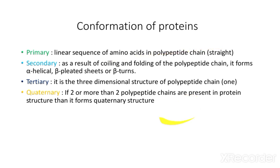Quaternary structure: if two or more than two polypeptide chains are present in a protein structure, then it forms a quaternary structure. In tertiary structure we discussed a single chain, but in quaternary structure more than two polypeptide chains join together and form a very complex structure, which we call quaternary structure.